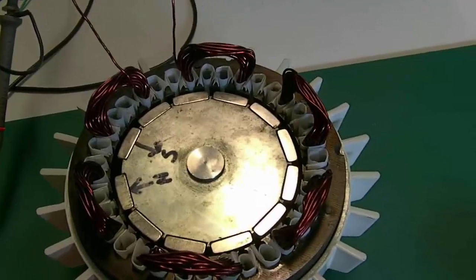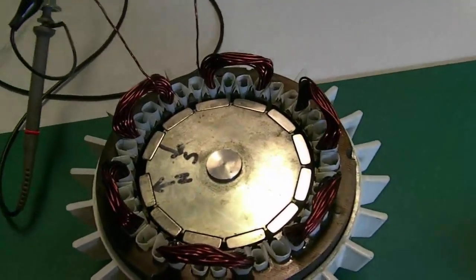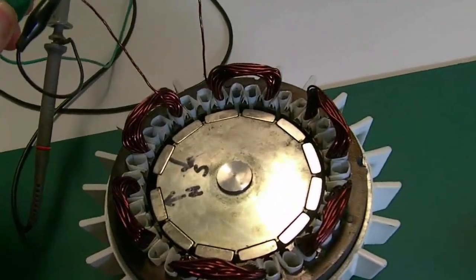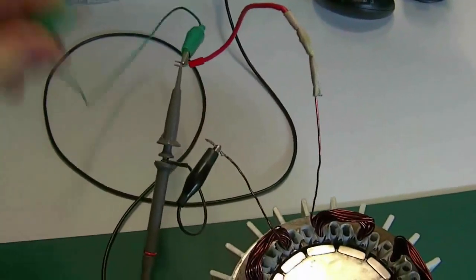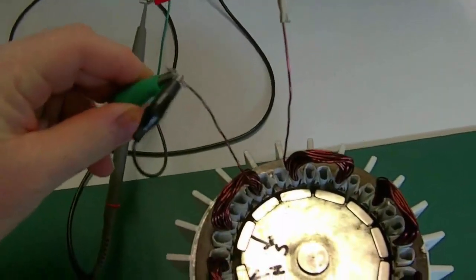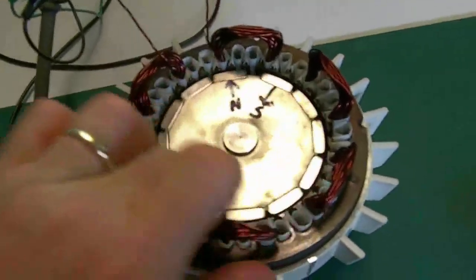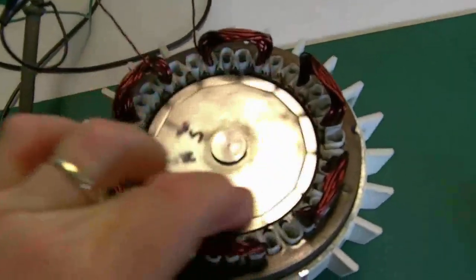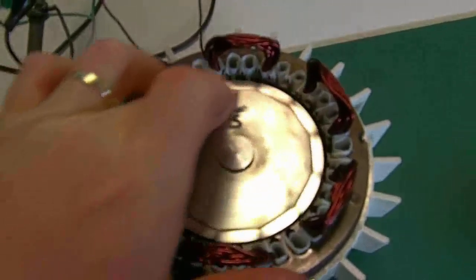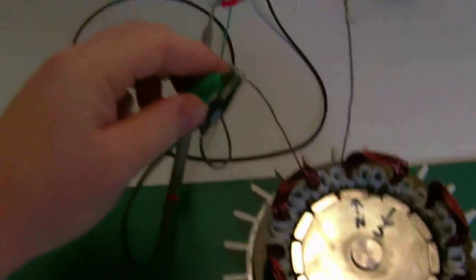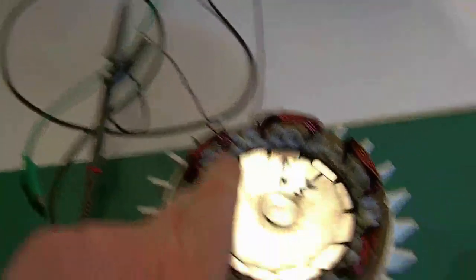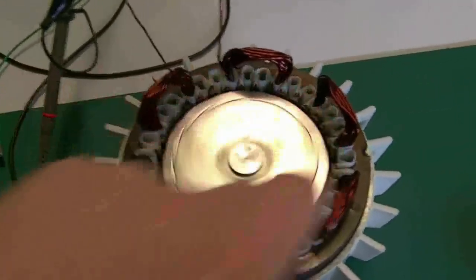The problem with generators is Lenz's law and the losses in them. So if I take this wire and if I short the generator, you can see there's a drag—there's a mechanical drag on the rotor. It's quite hard to turn. If I take the cord off, it's easy to turn.